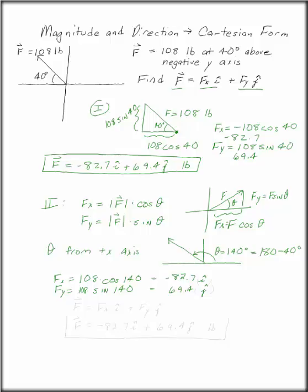So F is Fx times i plus Fy times j. F is minus 82.7 i plus 69.4 j. And again, don't forget your units.